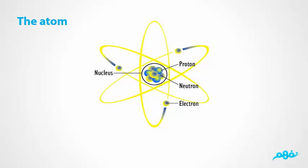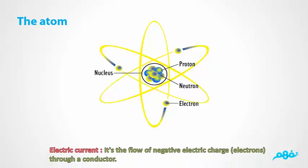The atom consists of a nucleus, which is the center of the atom. It contains a positive proton and a neutral neutron. Electrons have a negative charge and rotate around the nucleus. Due to the attraction force between protons and electrons, when the attraction force is weak, the electrons will leave the atom, become free, and move in the wires and conductors, creating the electric current.